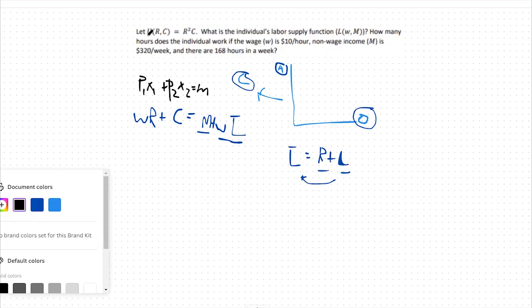Here we have R squared times C. This is our Cobb-Douglas-type utility function. We're also given some information that we can fill into this budget constraint: $10 per hour wage rate, our non-wage income is $320, and we have a possible 168 hours to work with.